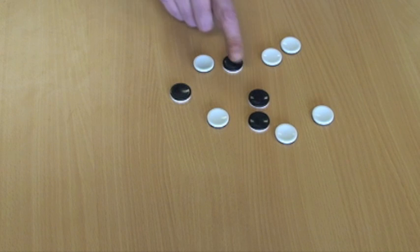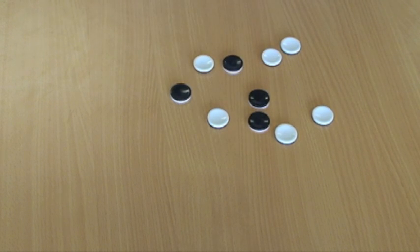And we know initially that four of them are black. Now, the challenge here is to divide these into two groups. The groups don't have to have the same number of disks, but each group must have exactly the same number of black disks.